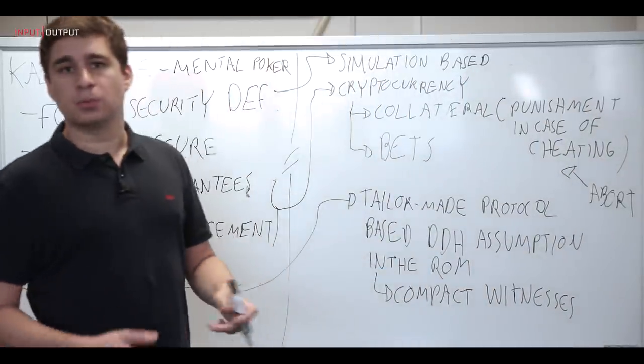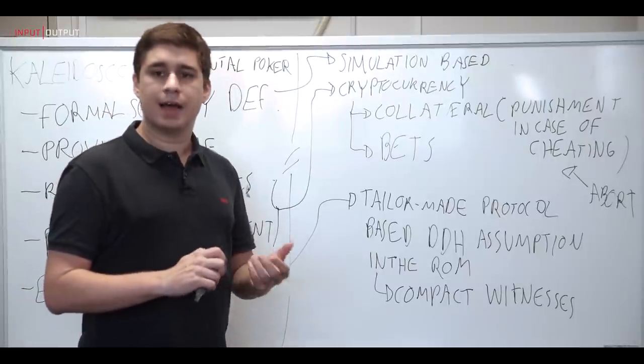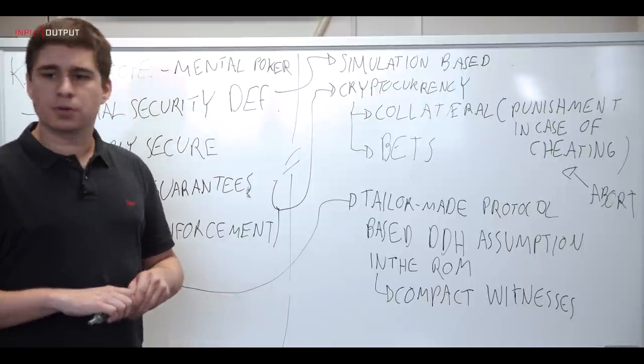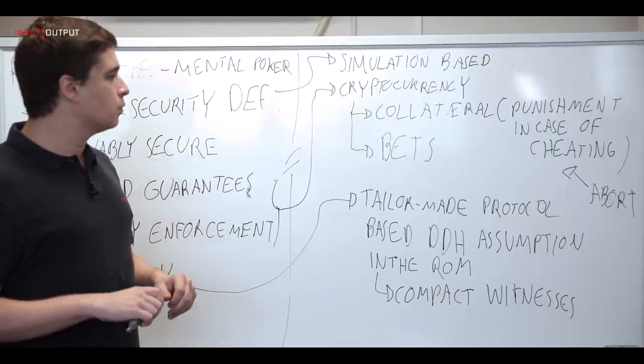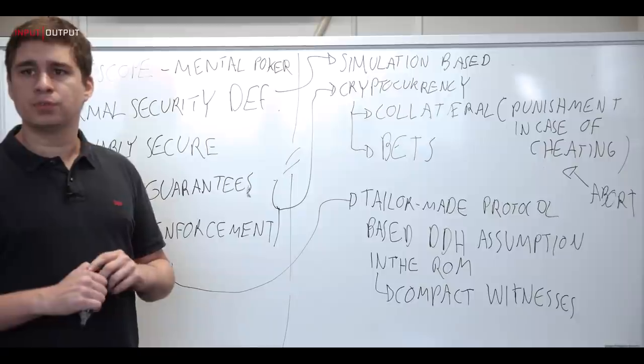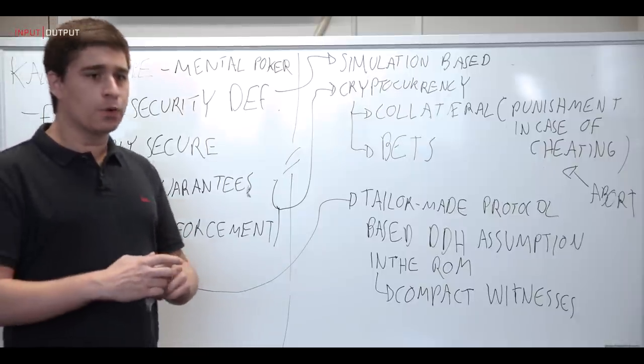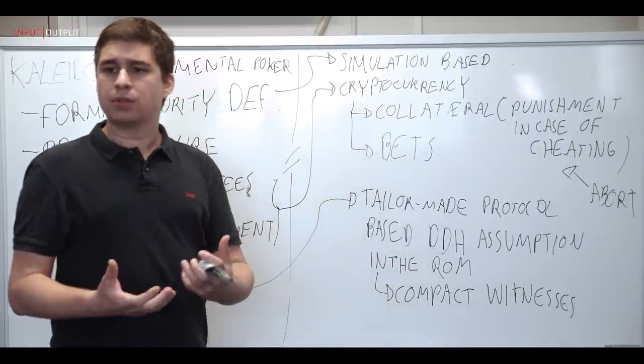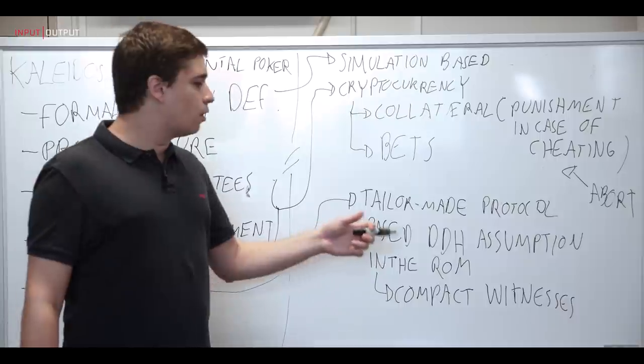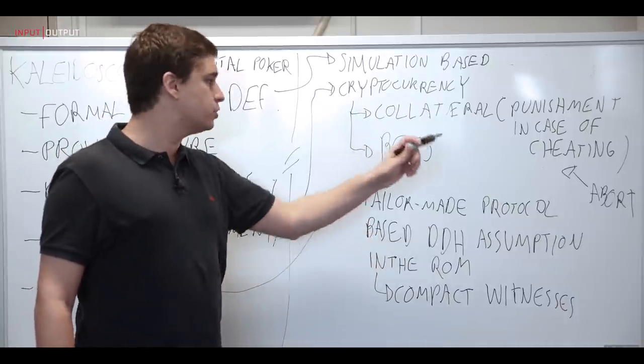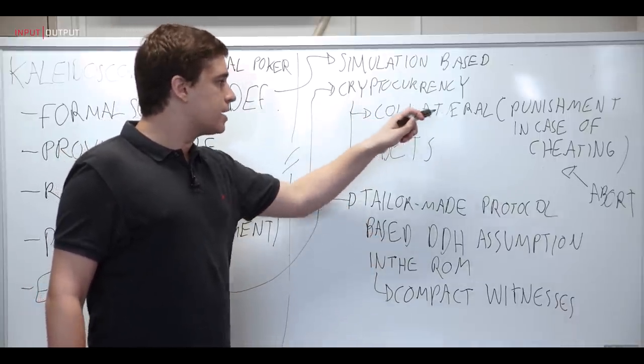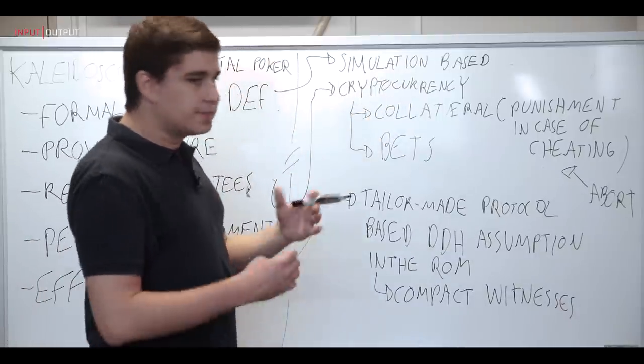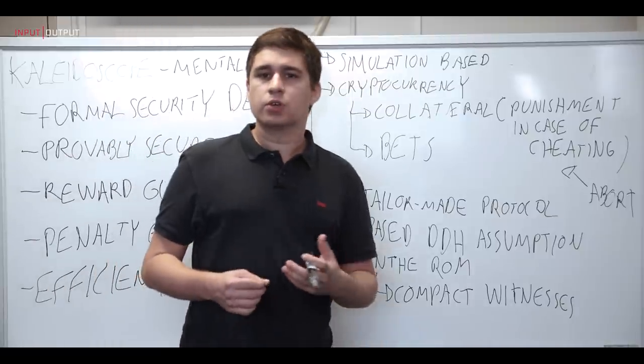And that's something we are able to provide through the careful design of this protocol based on this specific assumption. So we end up with a protocol that allows you to provide very short proofs that you have behaved well or bad. And those proofs are used to redeem your bets, to redeem all the money you have made in playing this game, and also to show that somebody has tried to cheat on you, in which case the cheater will be penalized losing his collateral money.